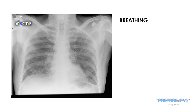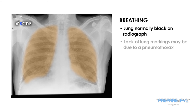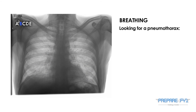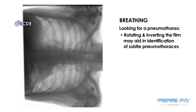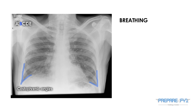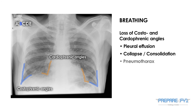B is for breathing. The lung is black on a radiograph with visible vascular markings going out to the periphery, and if they do not go out to the periphery, this may be the result of a pneumothorax. When looking for a pneumothorax, it can be useful to invert the colours on the radiograph and/or rotate the film. You can clearly see the costophrenic angles and the cardiophrenic angles outlined here. These angles can be blunted or lost in pleural effusion, collapse, consolidation, and pneumothorax.